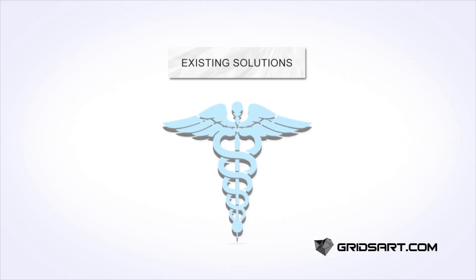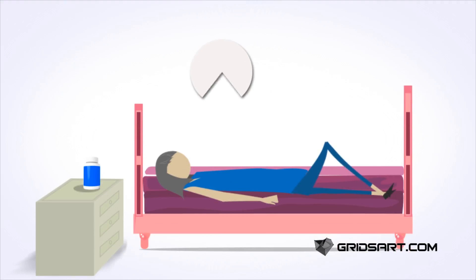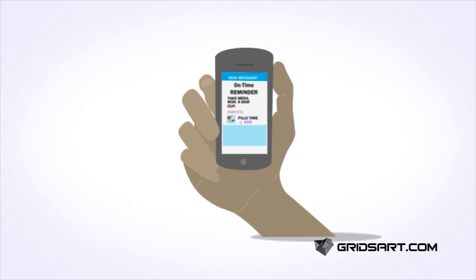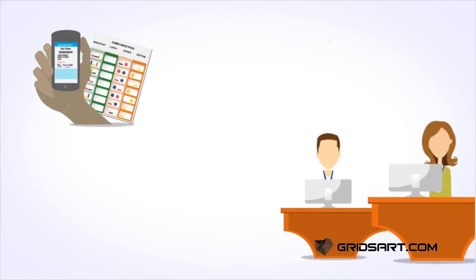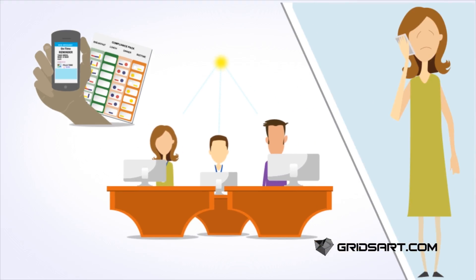Among existing solutions, the most common solution reminds patients to take their dosage at the correct time. Text message reminders and smartphone apps do this with some success, but cannot prevent overdosage. While using a compliance pack is cumbersome and has limited effectiveness, call center-based solutions are more effective as they monitor patients and send out reminders. However, they are expensive and do not maintain adherence records.